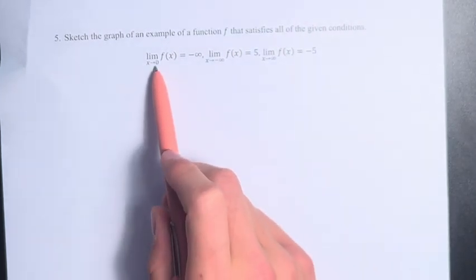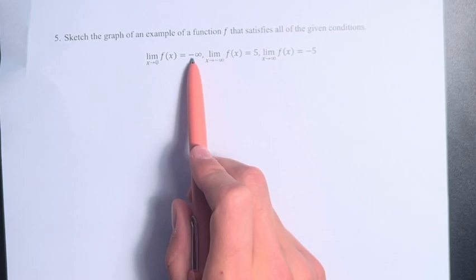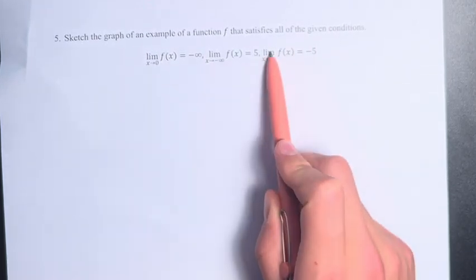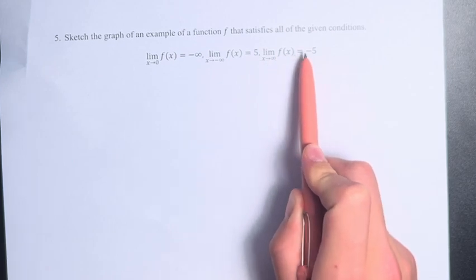We have the limit as x approaches 0 of f of x is equal to negative infinity, the limit as x approaches negative infinity of f of x is equal to 5, and the limit as x approaches infinity of f of x is equal to negative 5.